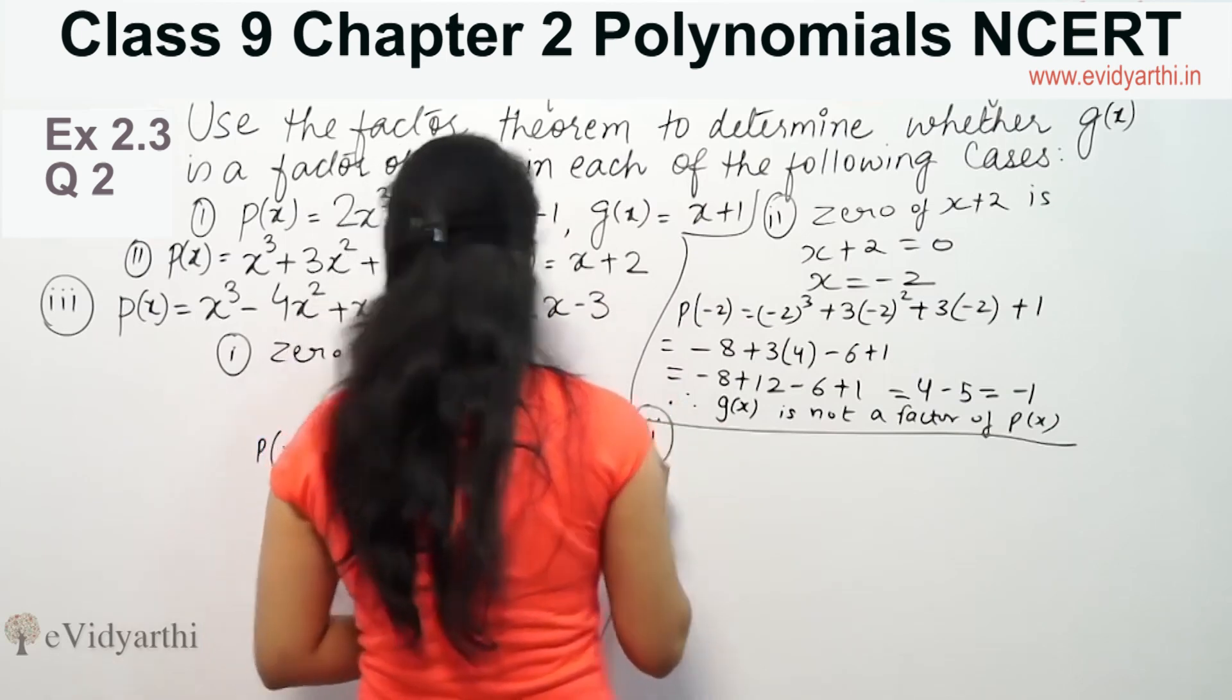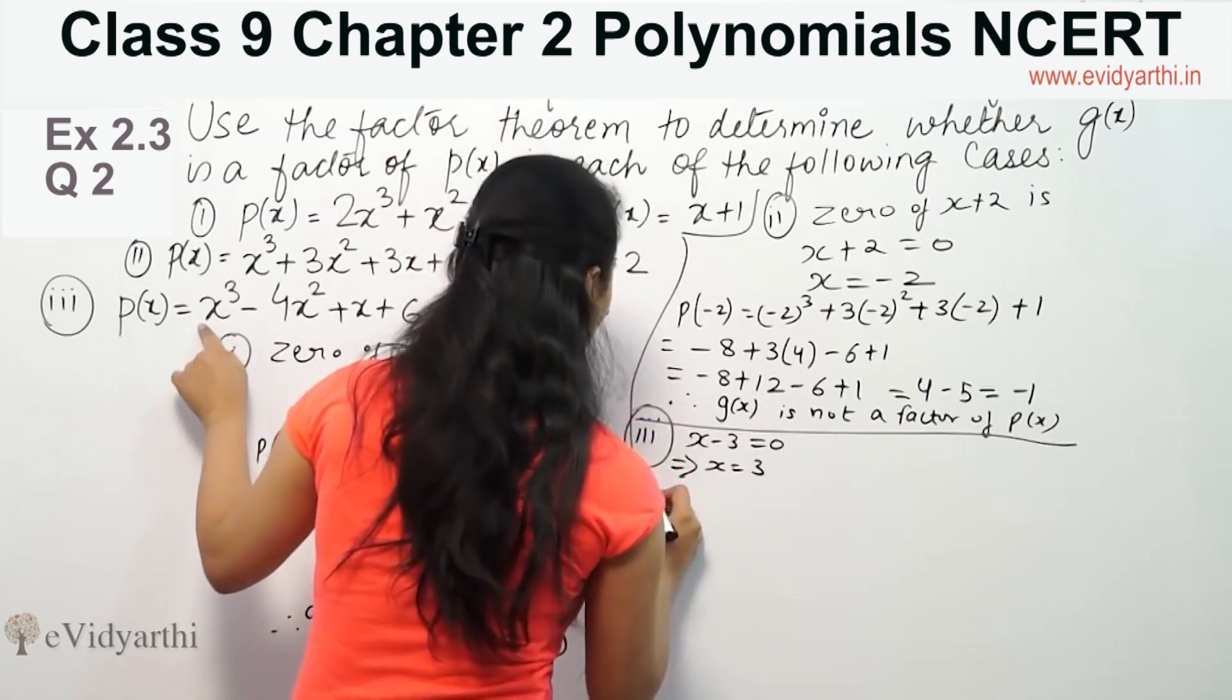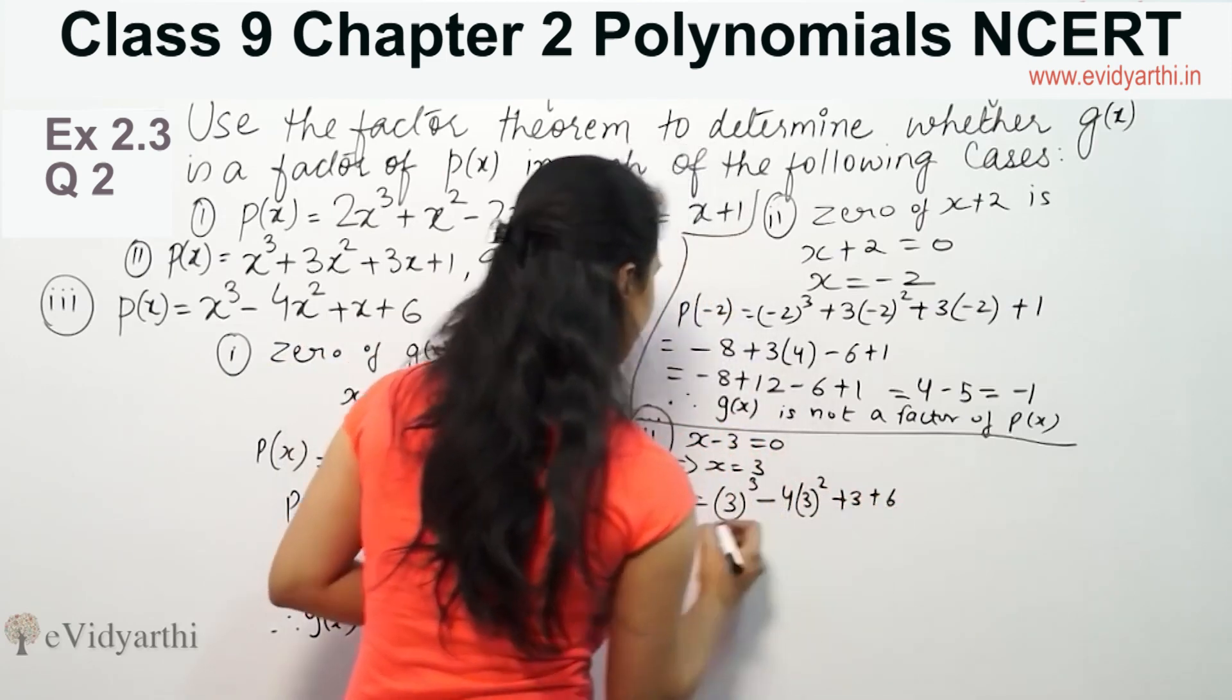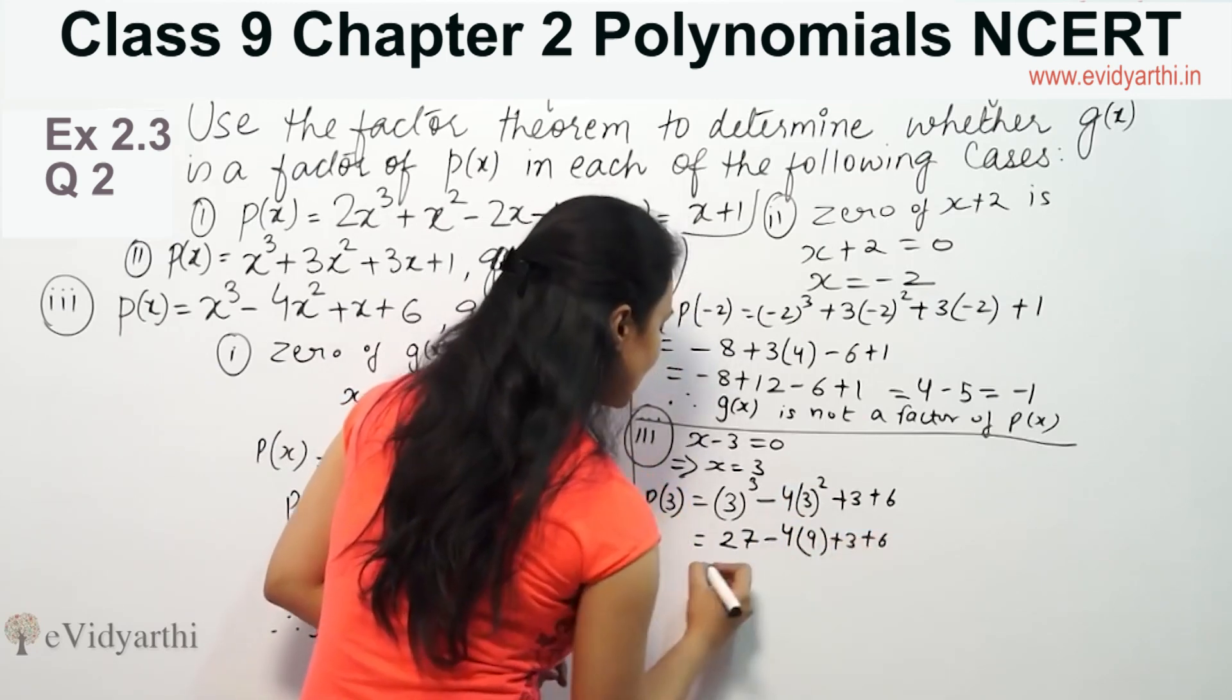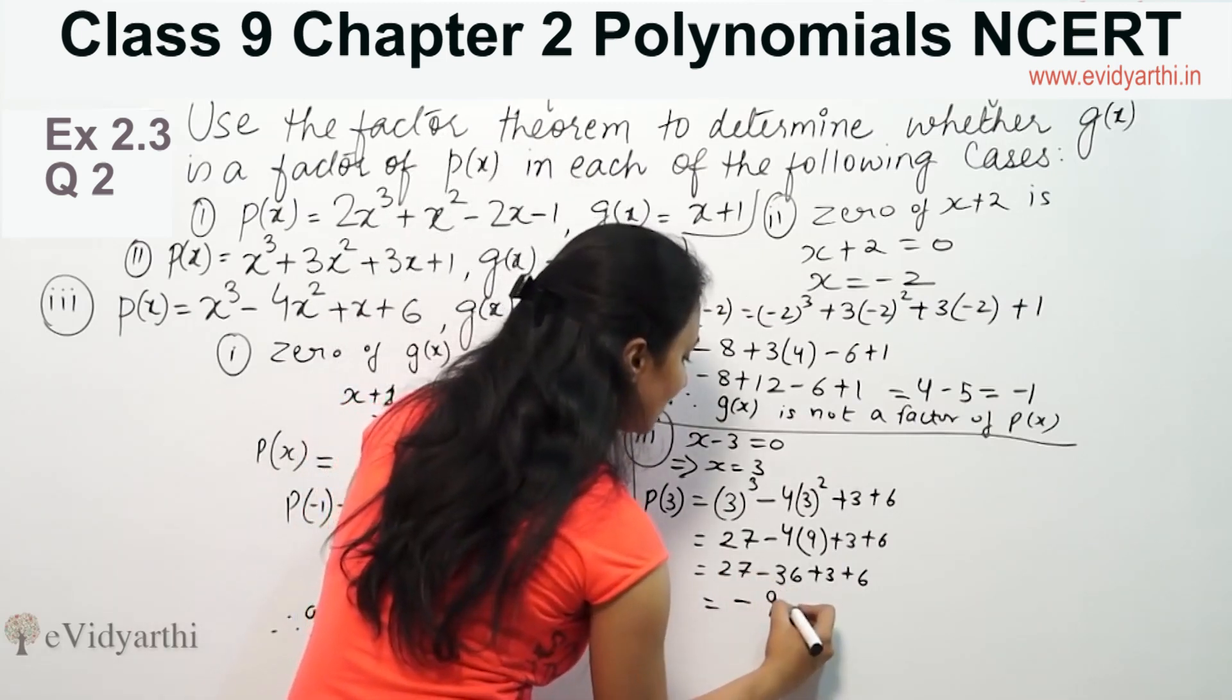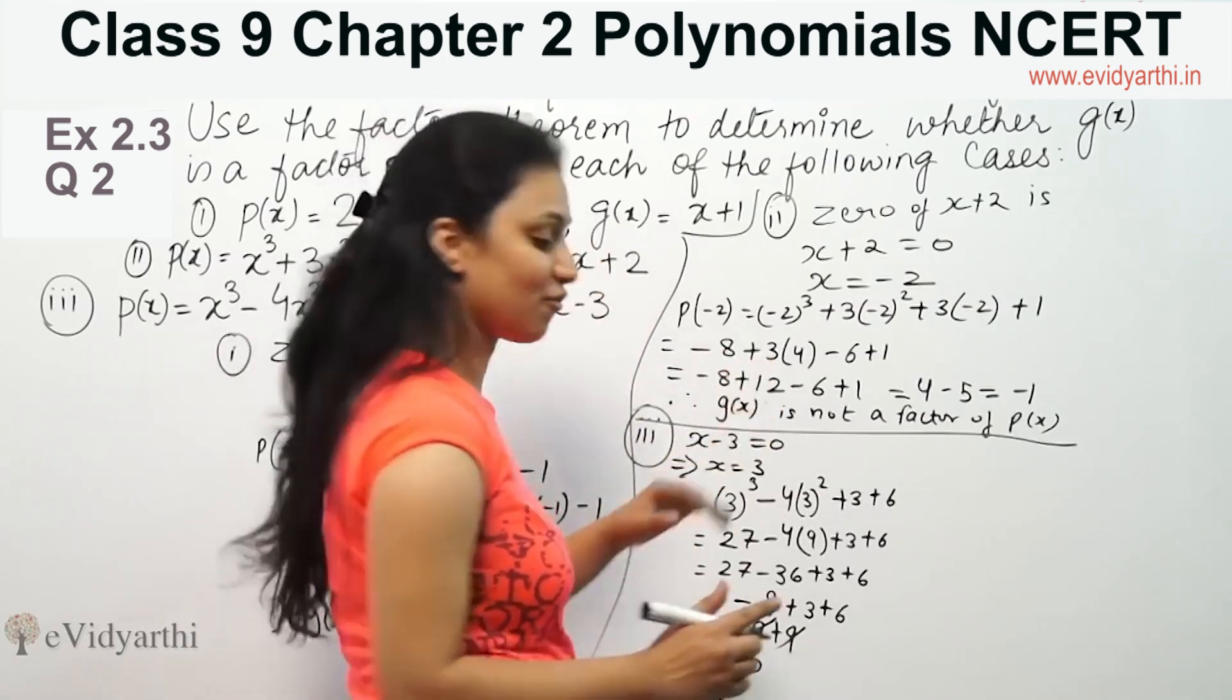In part number 3, we have x minus 3. So x minus 3 equals zero means x equals 3. This is p(3) equals 3³ - 4(3²) + 3 + 6. So 3³ is 27 minus 4 times 9 plus 3 plus 6. 27 minus 36 plus 3 plus 6. Plus minus, this is minus 9 plus 3 plus 6, minus 9 plus 9 which is 0.